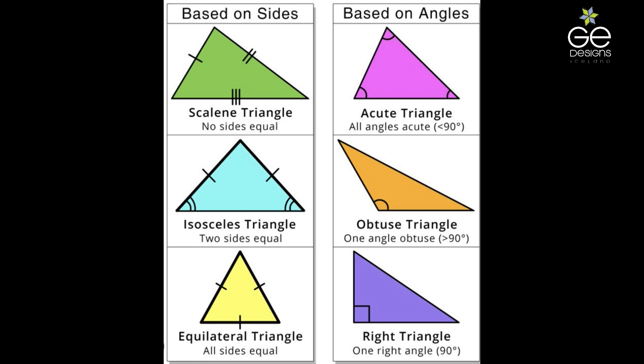If we look at the angles, there is an acute triangle where all angles are acute, meaning under 90 degrees. We have an obtuse triangle where one angle is more than 90 degrees, and then we have a right triangle, where one of the angles is 90 degrees. That might be something you hear in quilting as well.